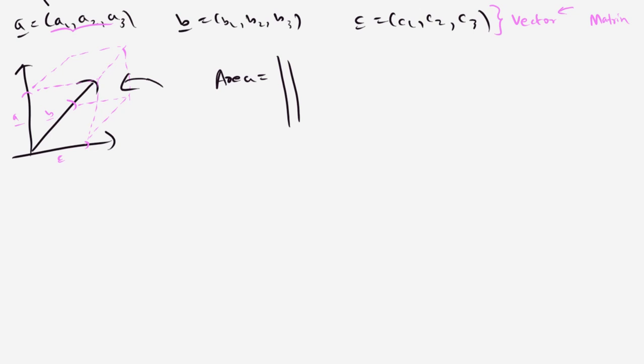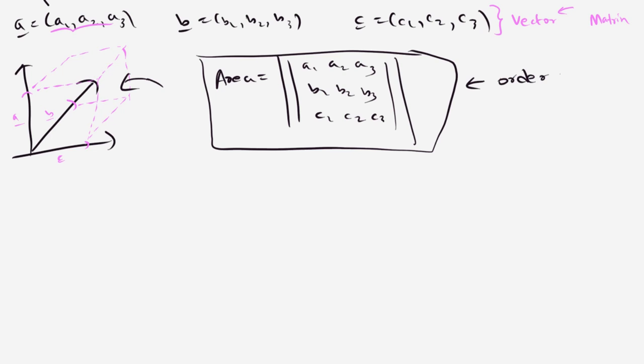All we have to take is the determinant of |a1, a2, a3; b1, b2, b3; c1, c2, c3|. So that is how we find the area of the parallelepiped formed by the order 3 determinant.